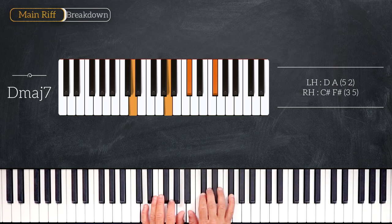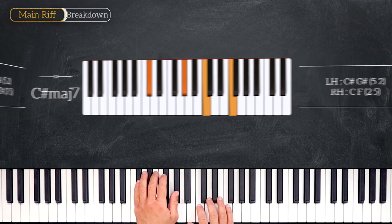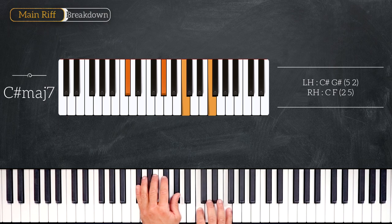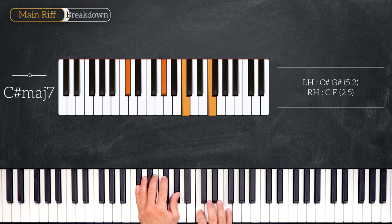Then right after we'll play C sharp major 7, taking all the notes down one half step. So we have C sharp, G sharp, C, F.